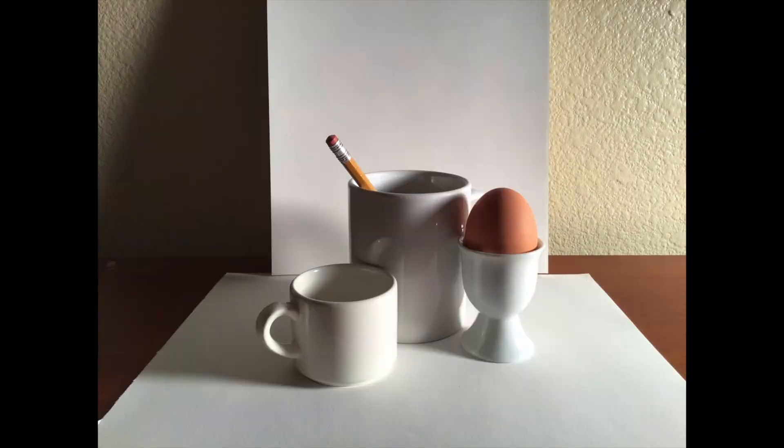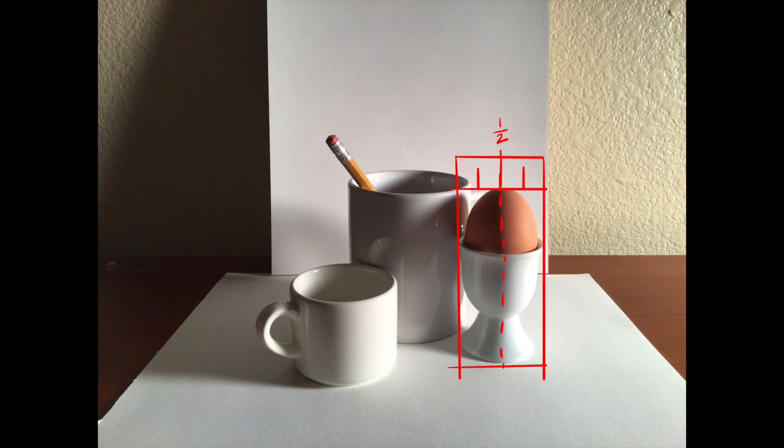Once you've decided on your light source, adjust the light so that the objects are half to three quarters lit. In other words, light the objects so that half to a quarter of the object's surface is with a core shadow.